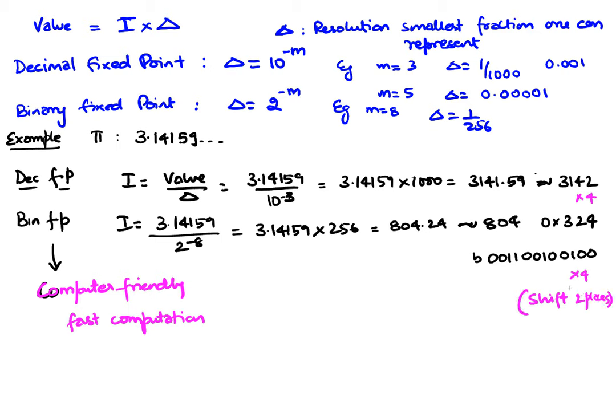Whereas multiplying here by 4 requires an actual arithmetic. Whether you do successive addition or you have a multiplier, ripple carry adders, whatnot, whatever circuit you have, you need to use something like that. So while decimal fixed point is human friendly, binary fixed point is computer friendly.